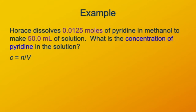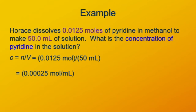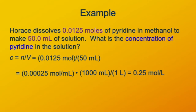Our formula is concentration equals number of moles divided by volume: 0.0125 moles divided by 50 milliliters gives 0.00025 moles per milliliter. Those aren't the units we want — our normal unit of concentration is molar, moles per liter. So we convert the milliliters into liters, and we find that it's 0.25 moles per liter. With three significant figures, the concentration of the solution is 0.250 molar in pyridine.